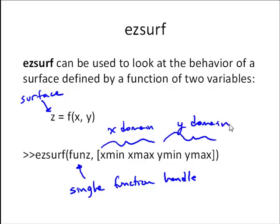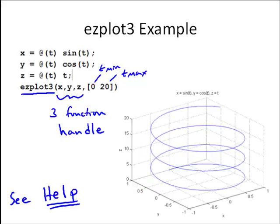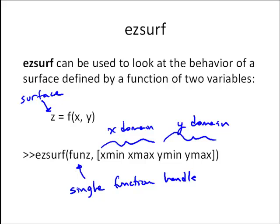So note the difference here between EasySurf and EasyPlot3. For EasyPlot3, we have three different function handles, because our function is defined parametrically in terms of one variable t. We have x of t, y of t, and z of t. That's for EasyPlot3. For EasySurf, now we've got a surface z, which is a function of f of x and y. So a little bit different here in how this is defined.